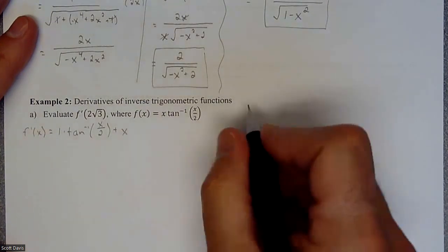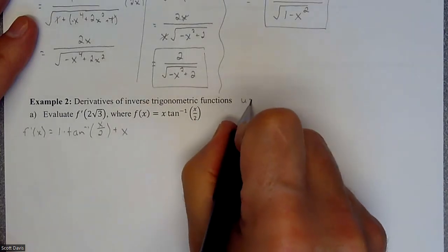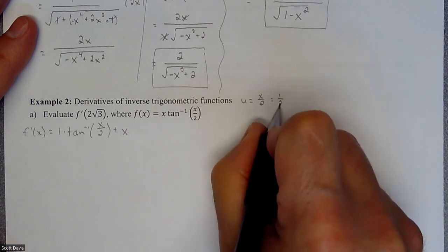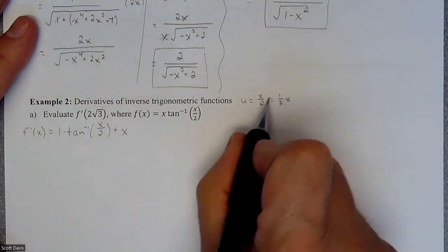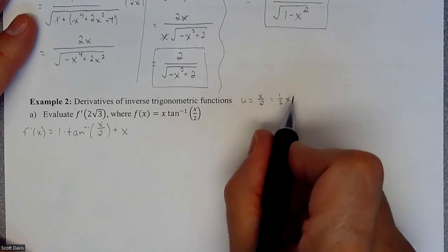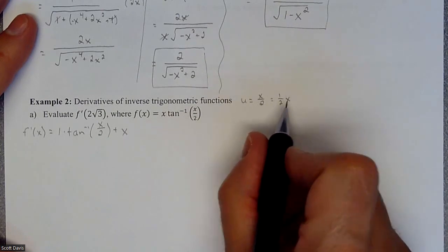So this x, this is our u value. So our u is x over 2, which is also 1 half x. And I'll use both versions of that, because when I do the derivative, it's just a little more obvious to me when I have a one half x, that my chain rule piece of this is just going to be a one half.